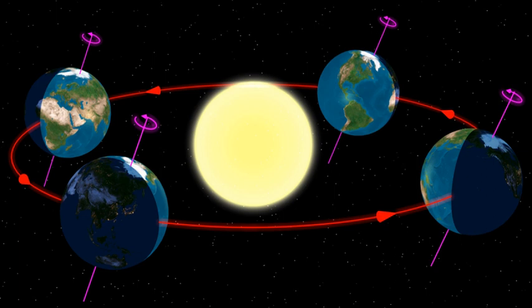By astronomical convention, the four seasons are determined by the solstices—the two points in Earth's orbit of maximum tilt toward or away from the Sun—and the equinoxes—the points where Earth's tilted axis and a line from Earth to Sun are exactly perpendicular. The solstices and equinoxes divide the year into four approximately equal parts.